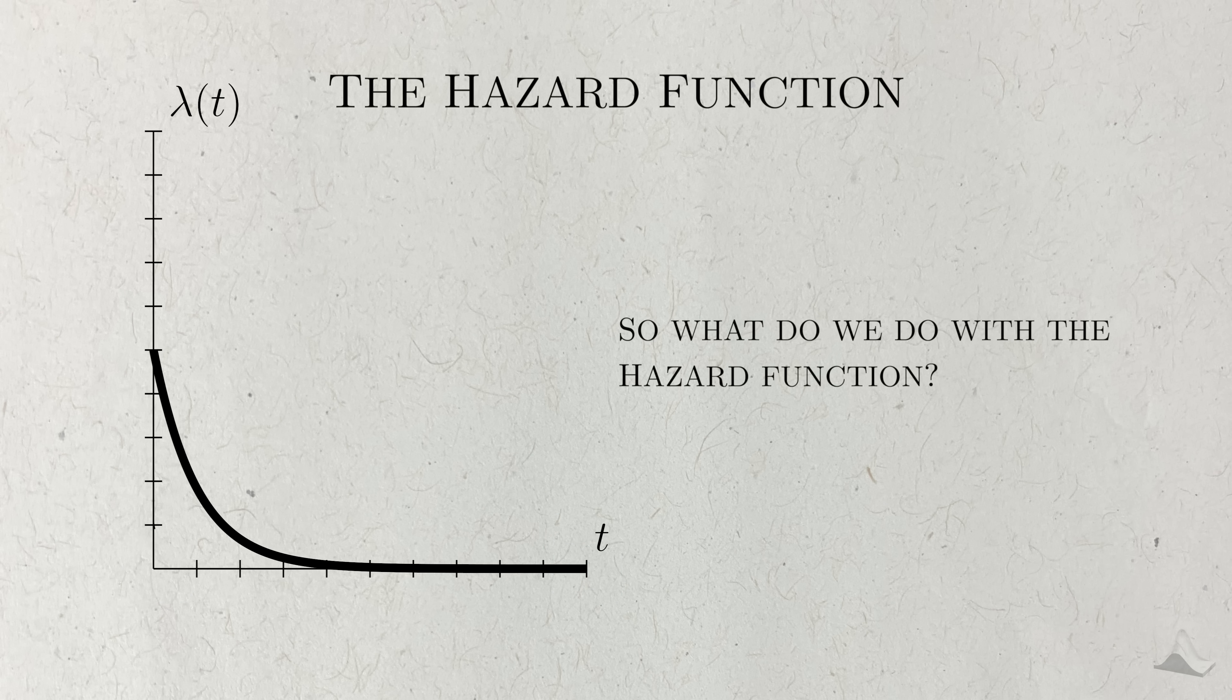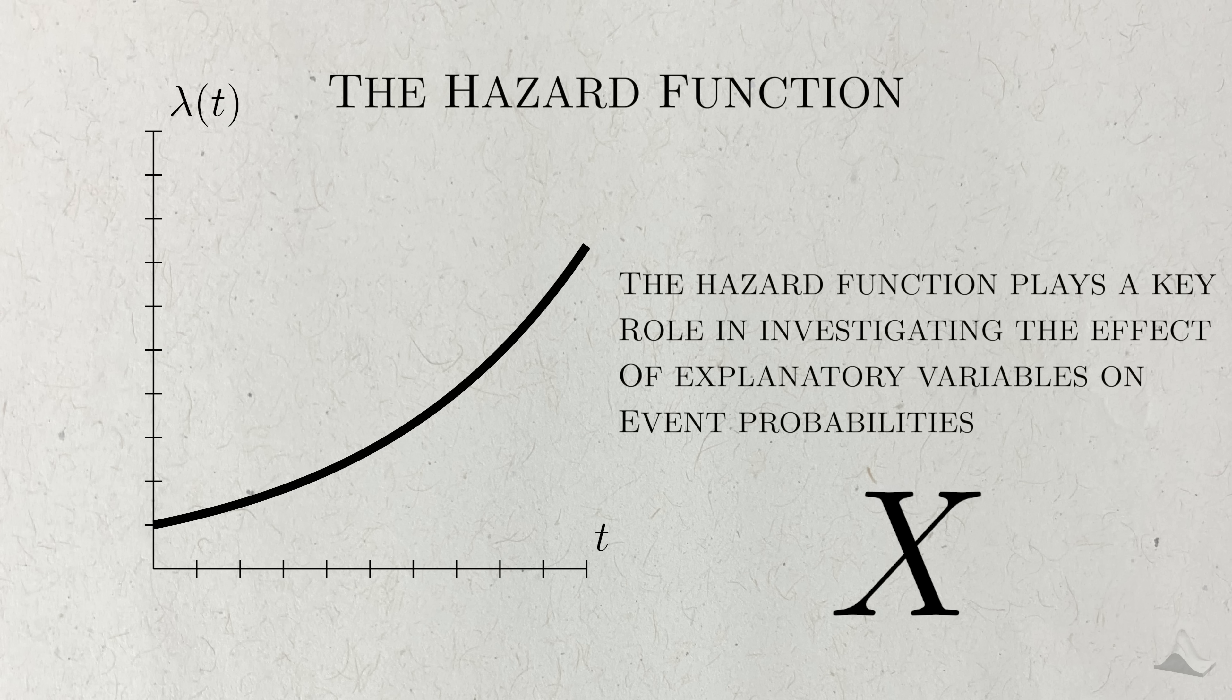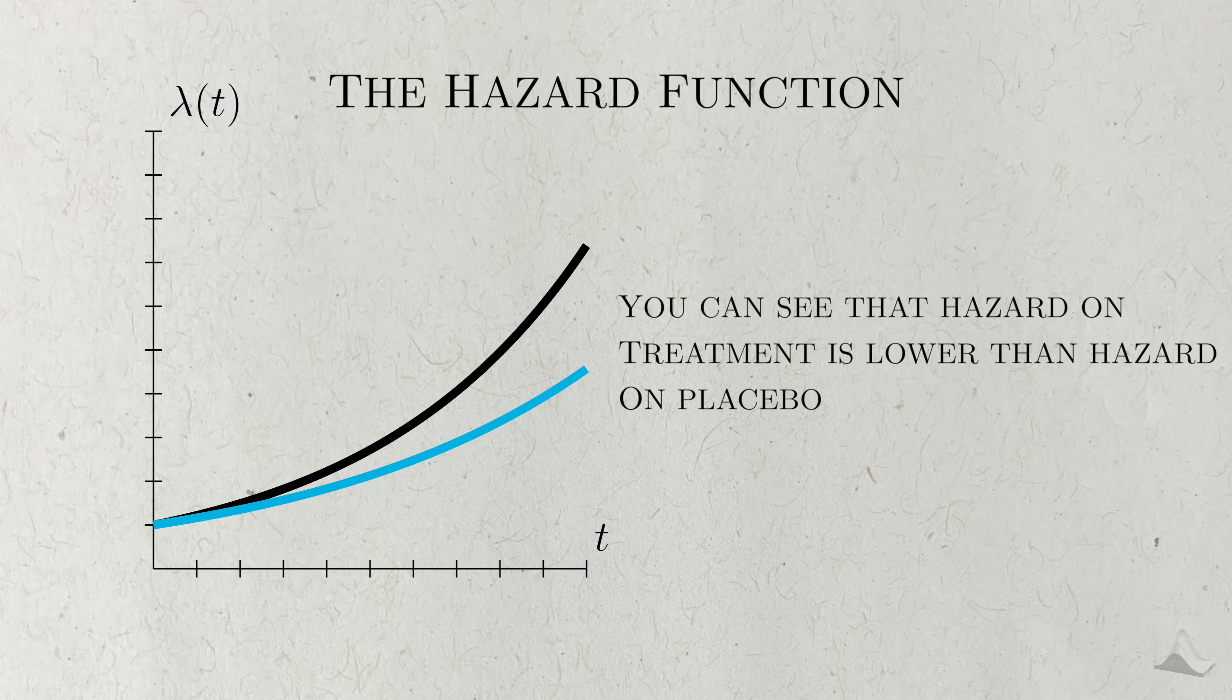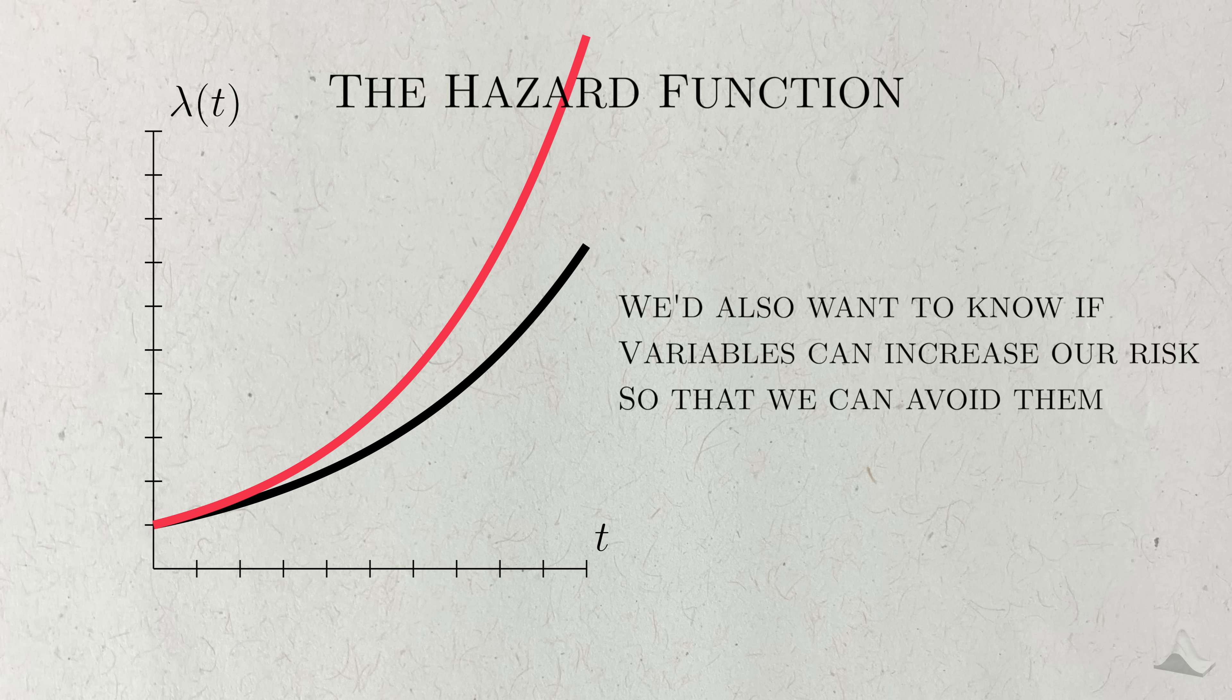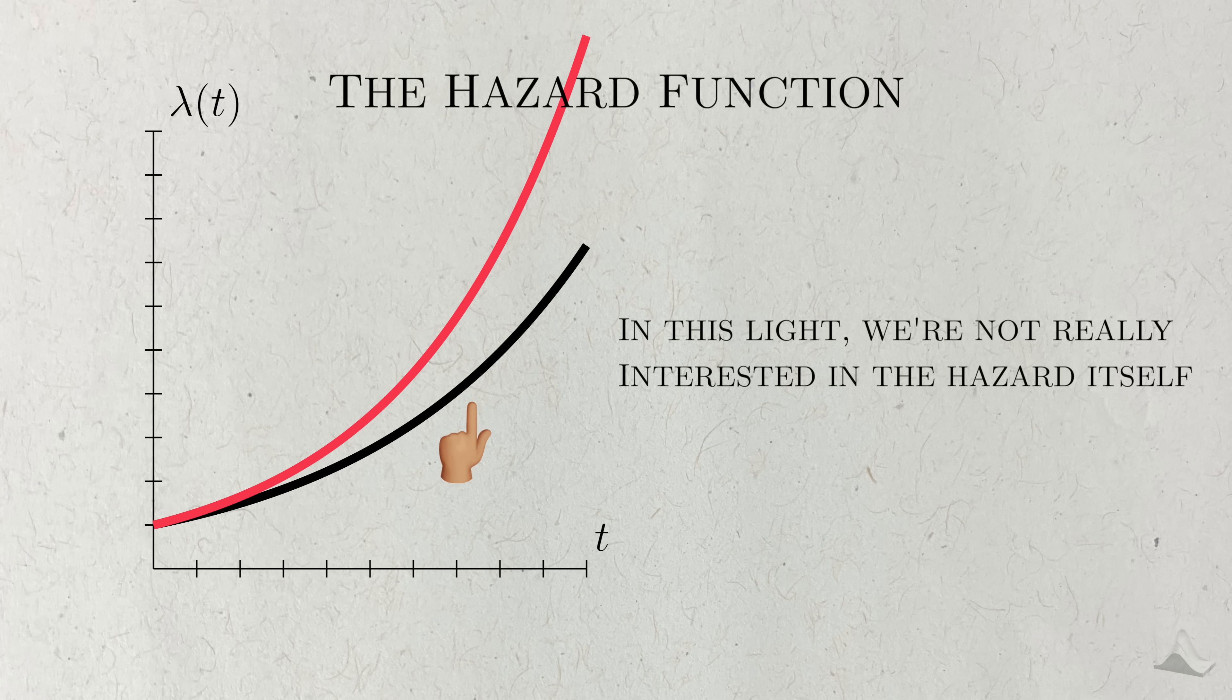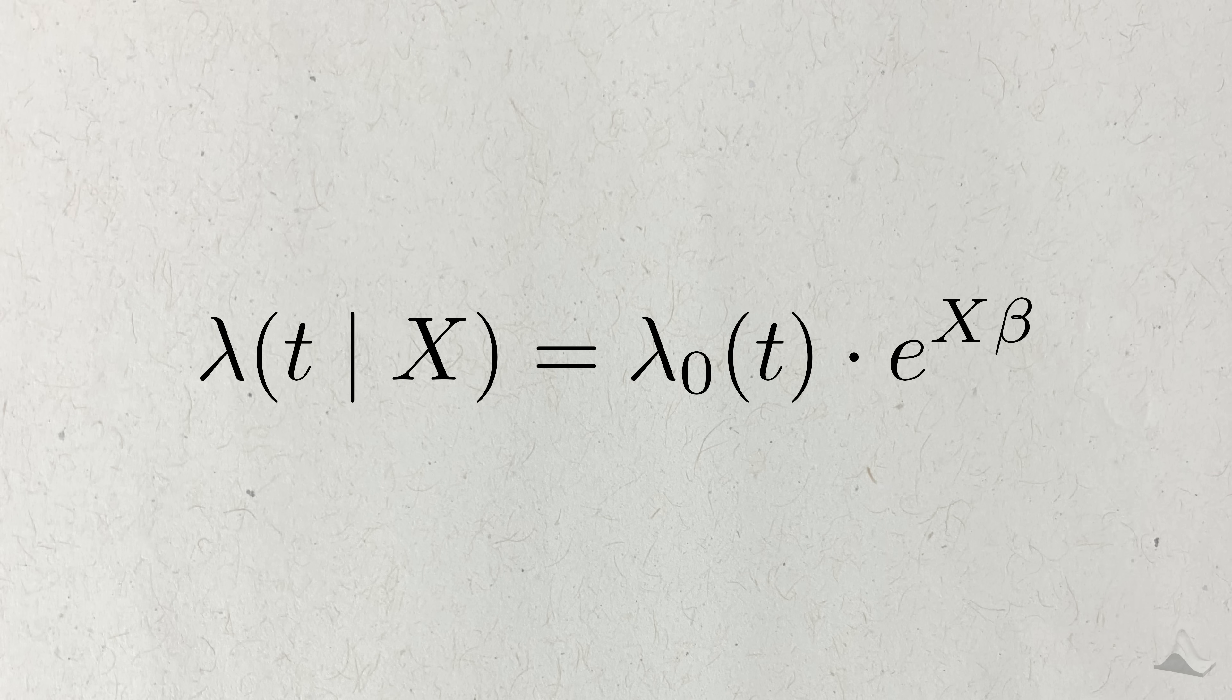So what do we do with the hazard function in survival analysis? As it turns out, the hazard function plays a key role in examining if explanatory variables change the probability that an event will happen. If this is the hazard function of someone on placebo, and this is the hazard function of that same person, but on treatment, you can see that your hazard is lower for a given time. This is what we'd hope to see. Conversely, we'd also want to avoid any risk factors that increase our hazard, since this increases our chance of the event happening. But in this light, we're not really interested in the hazard function itself. We're more so interested in how other variables change the function. This is the idea behind another one of the most important models in statistics, the Proportional Hazards Model.